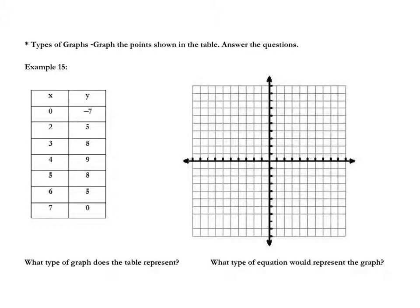Plotting the points from the table: (0, −7), (2, 5), (3, 8), (4, 9), (5, 8), (6, 5), and (7, 0).